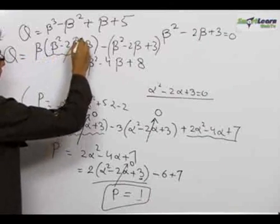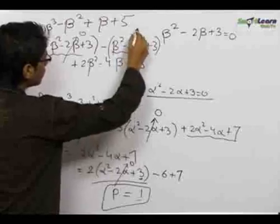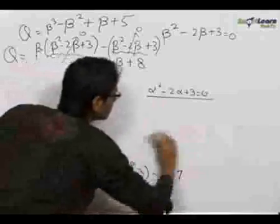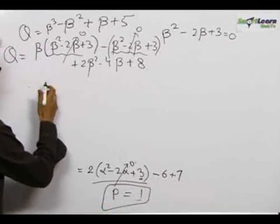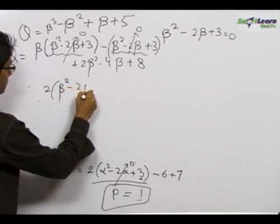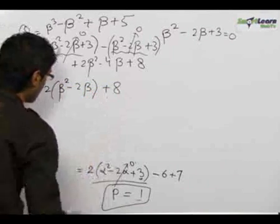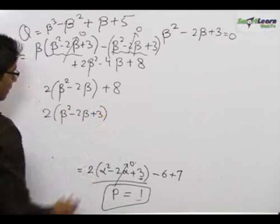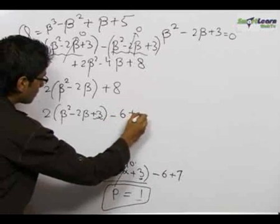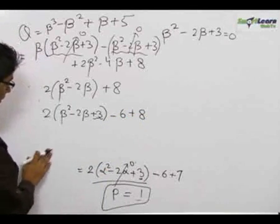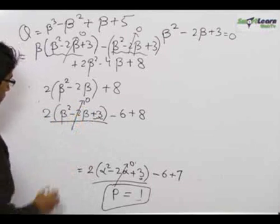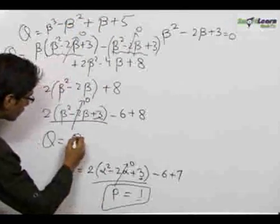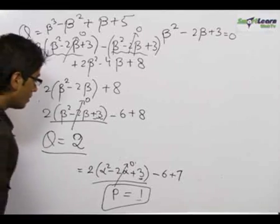We know (β² - 2β + 3) = 0, so those factors vanish and we are left with 2β² - 4β + 8. Writing this as 2(β² - 2β + 3) - 6 + 8, and since (β² - 2β + 3) = 0, we get q = 2. So the longer term β³ - β² + β + 5 has been reduced to the simpler value of 2.